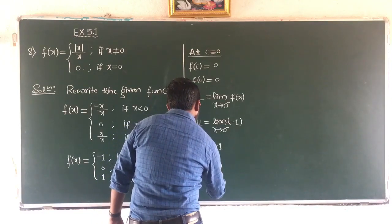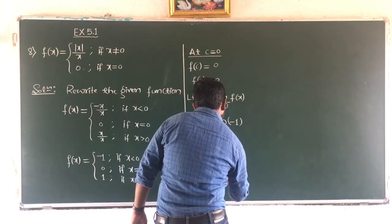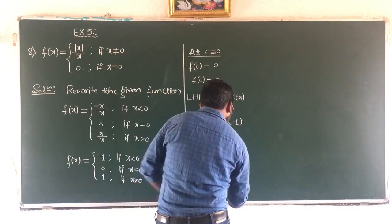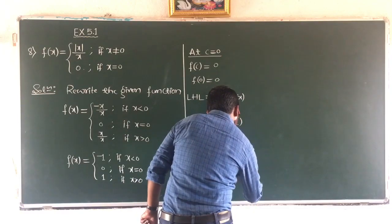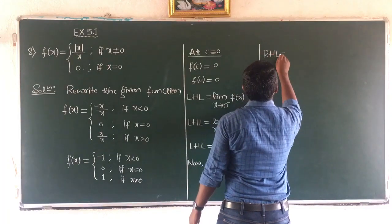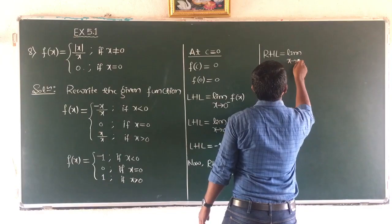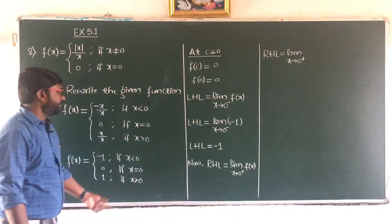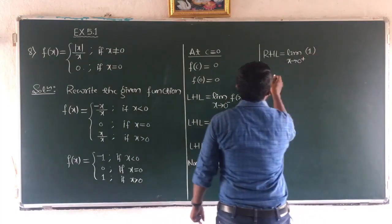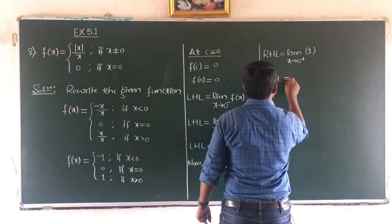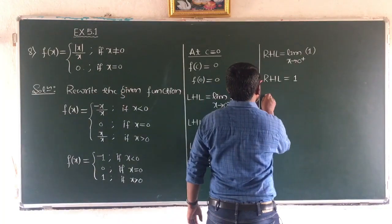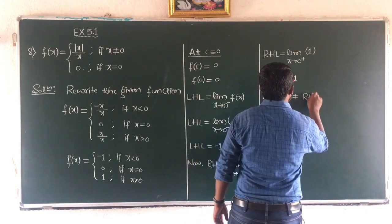For the right hand limit, RHL equals limit as x tends to 0 plus of f(x). Since 0 plus means greater than 0, the function is 1. The limit of a constant is always the constant, so RHL equals 1. LHL is not equal to RHL, therefore the function is not continuous at c equal to 0.